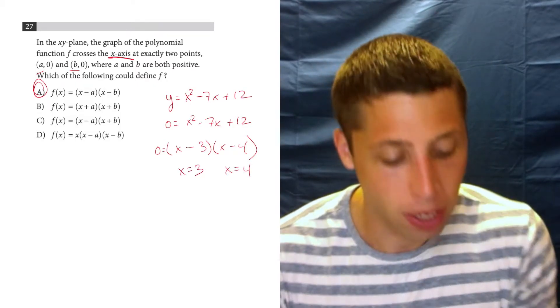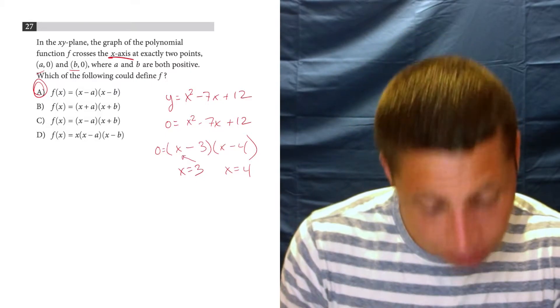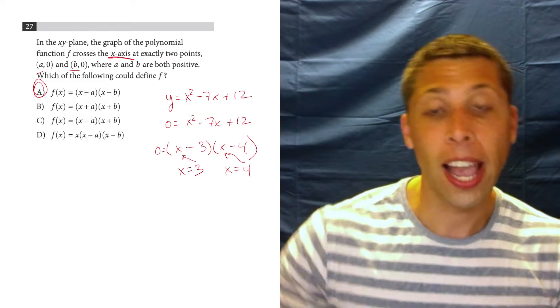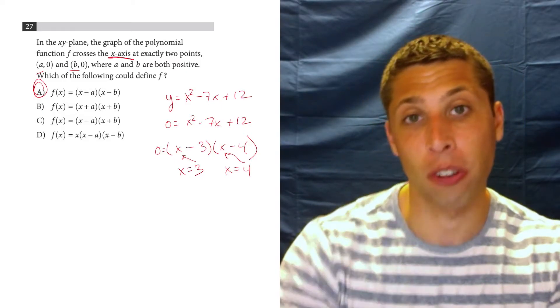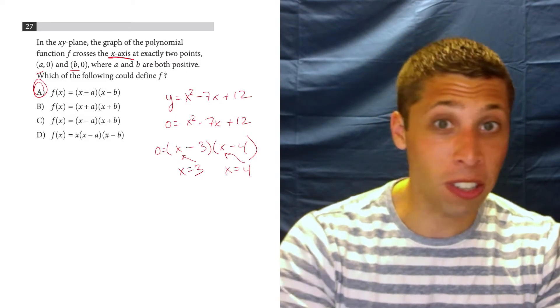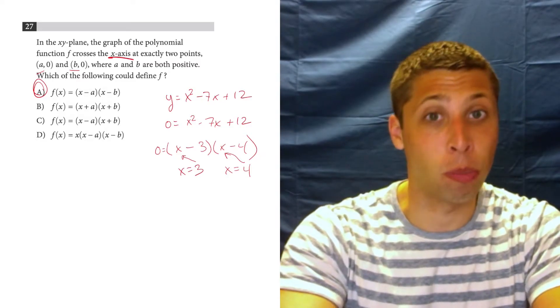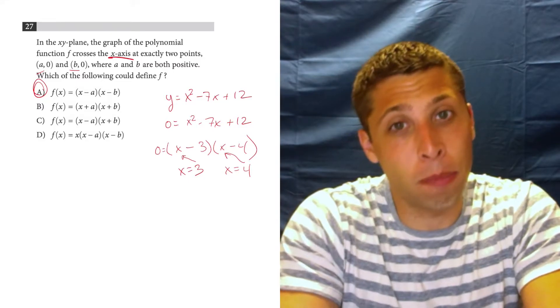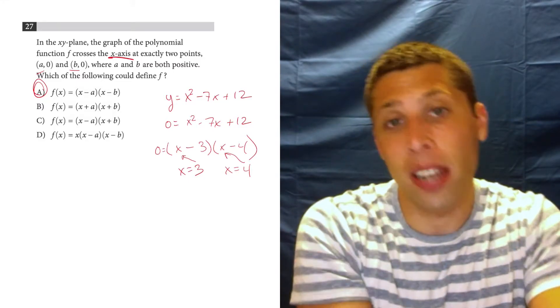But we usually just take a little shortcut and we're like, oh, x is 3, x is 4, because if we put 3 in for x or 4 in for x, it would make the term 0, and then that would make the whole thing 0 because it's all multiplication. So this is just like basic understanding of algebra 2.